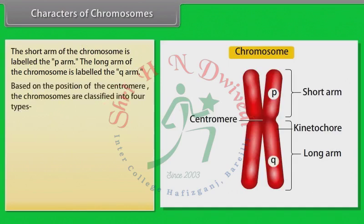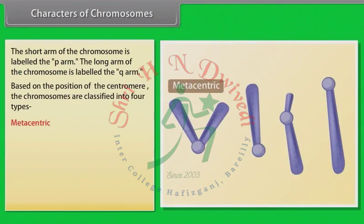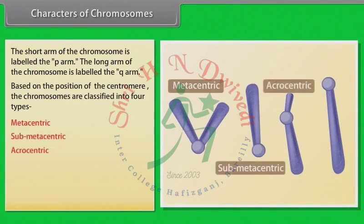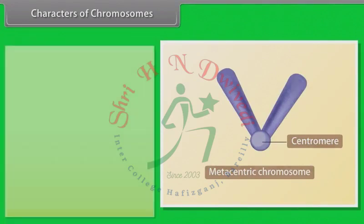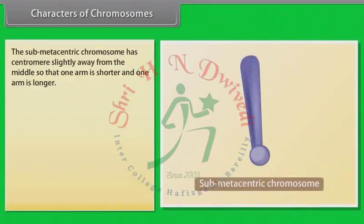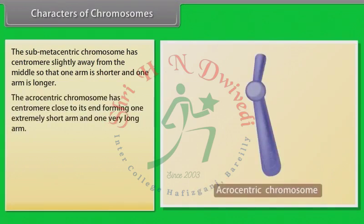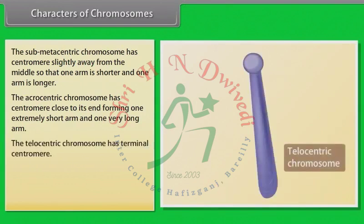Based on the position of the centromere, chromosomes are classified into four types: metacentric, sub-metacentric, acrocentric, and telocentric. The metacentric chromosome has the centromere in the middle, forming two equal arms. The sub-metacentric chromosome has the centromere slightly away from the middle, so one arm is shorter and one is longer. The acrocentric chromosome has the centromere close to its end, forming one extremely short arm and one very long arm. The telocentric chromosome has a terminal centromere.